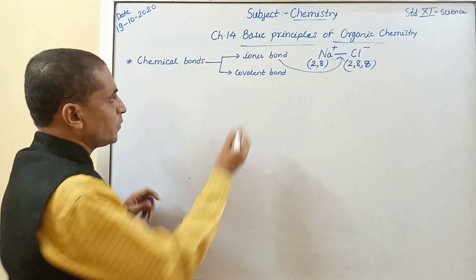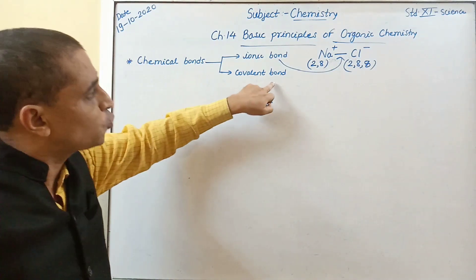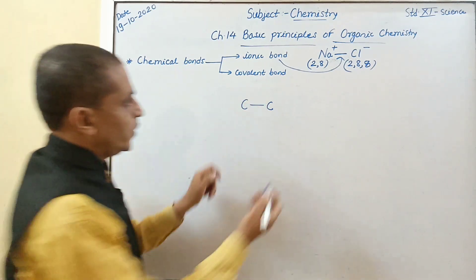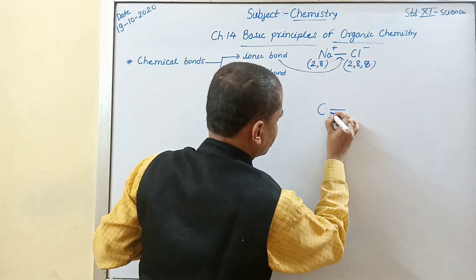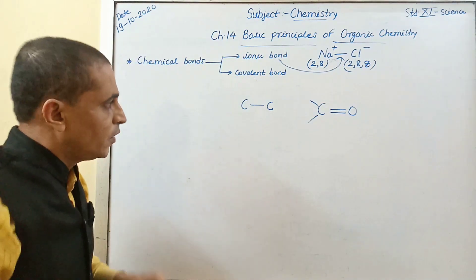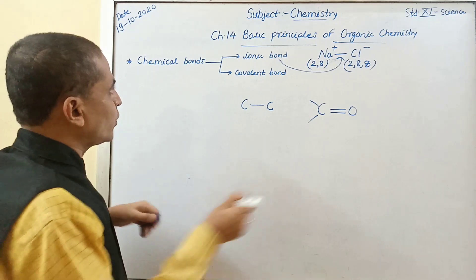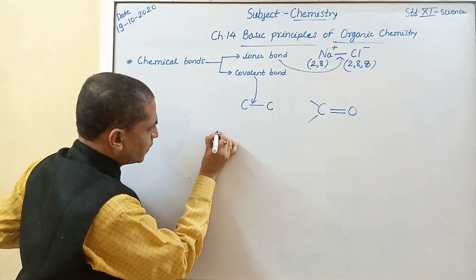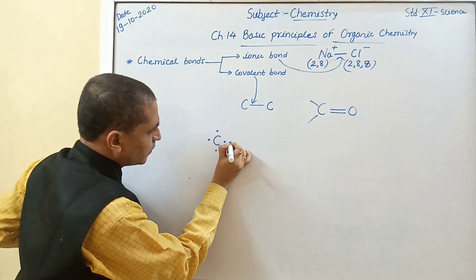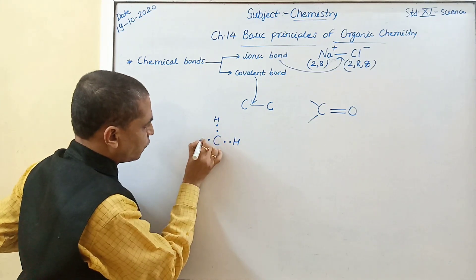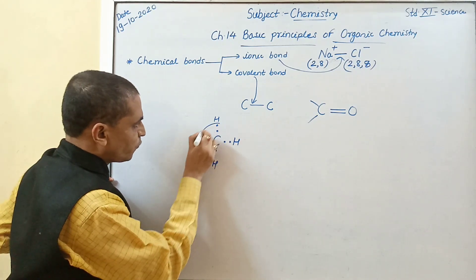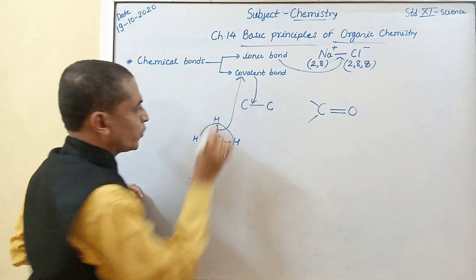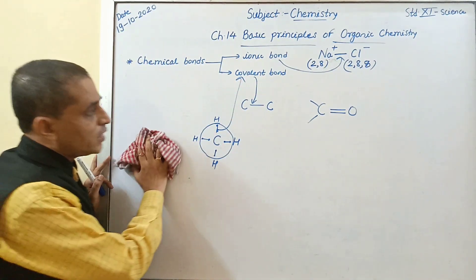Carbon is not able to donate or gain electrons. So carbon can share its 4 valence electrons with carbon as well as with oxygen and other atoms. The covalent bond is formed by sharing of electrons. I have taken carbon — there are 4 valence electrons: 1, 2, 3, 4. Carbon can share these electrons with 4 hydrogen atoms. So it will form a molecule. These covalent bonds are formed by sharing of electrons.